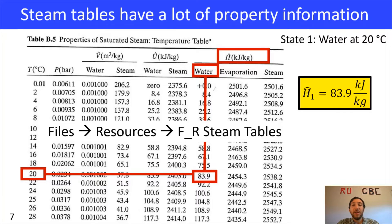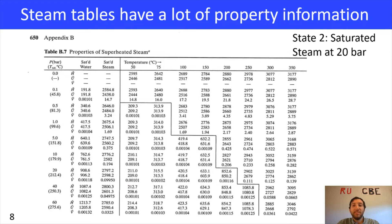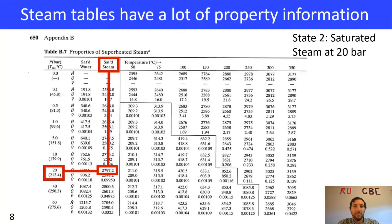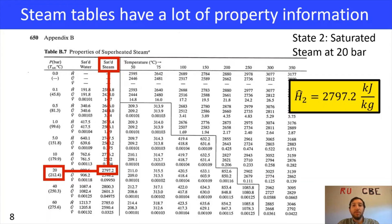Now that we've got state one, we need to get state two. For state two we're going to use a different steam table that has information for steam. For state two, remember, we have saturated steam at 20 bar. We look for saturated steam, then look for our pressure of 20 bar, go across the table, and we find that for state two the enthalpy is 2797.2 kilojoules per kilogram.